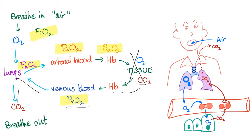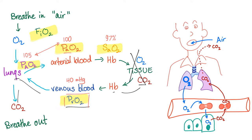Normal PAO2 is about 105 mmHg. Normal PaO2 is about 100 — that's why there is an A-a gradient, and normally it's 5 to 15. Normal SaO2 is about 97%, and normal PvO2 is about 40 mmHg — that's the partial pressure of oxygen in the venous blood. Of course, there is more oxygen in the artery than the vein.